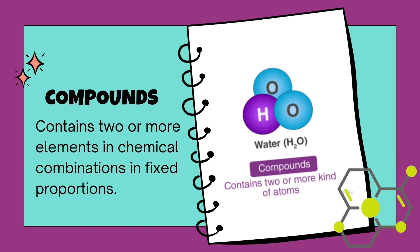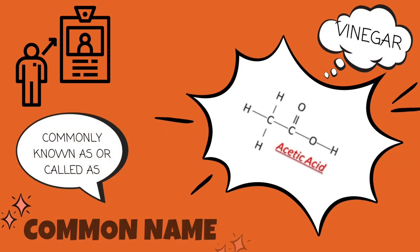Compounds contain two or more elements in chemical combinations in fixed proportions. Many compounds exist as molecules, such as water, hydrogen peroxide, hydrogen chloride, sulfuric acid, acetic acid, carbon dioxide, methane, methanol, and ethanol. These compounds have their common names and are represented by their chemical formulas.